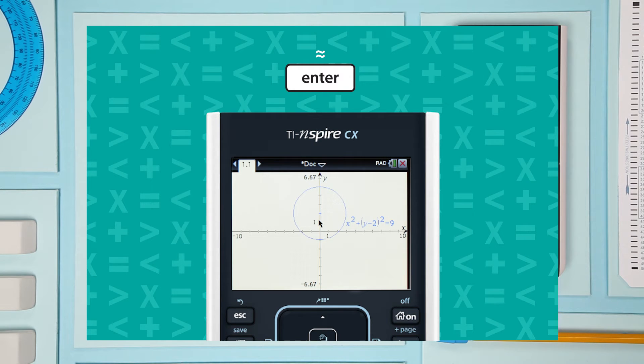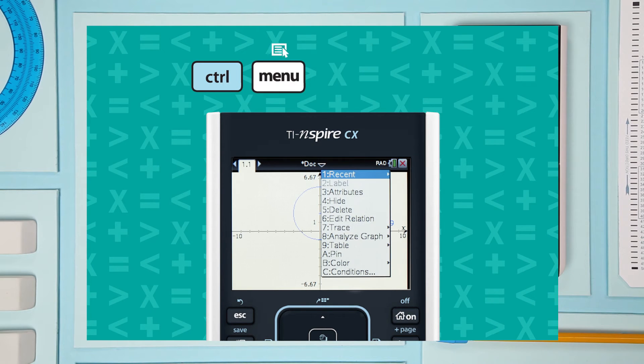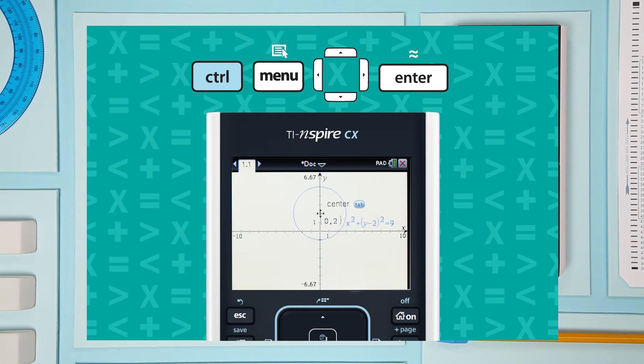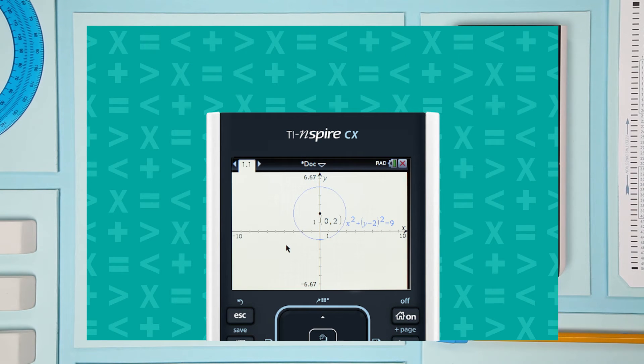Here's where the relation feature comes in handy. You can use it to find the center. Hover near what looks like the center. Your cursor will change when you are close to it. Then press Control. Menu. Select Analyze Graph. Analyze Conics. And Center. There it is. The coordinates for the center are 0, 2.